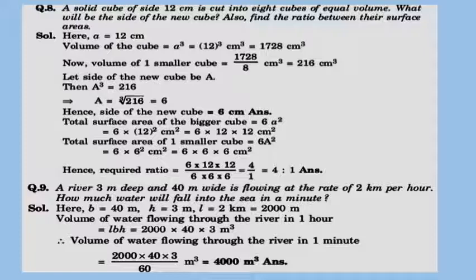A solid cube of side 12 cm is cut into 8 cubes of equal volume. What will be the side of each new cube? Also find the ratio of their surface areas. Volume of the original cube = 12³ = 1728 cm³. Volume of one smaller cube = 1728 ÷ 8 = 216 cm³. Let the new side be A, so A = cube root of 216 = 6 cm. After calculating the total surface area of both cubes and taking the ratio, the answer is 4:1.